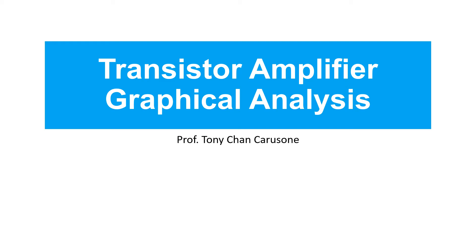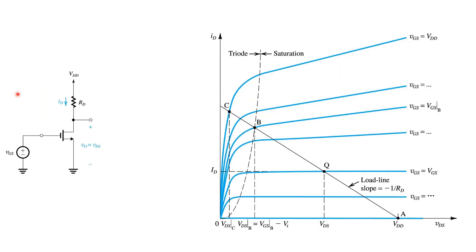In this video, we'll look at the graphical analysis of transistor amplifiers. Here we see again the NMOS amplifier, and on the right, a plot of the drain current flowing through the transistor and resistor RD, plotted versus the drain source voltage.